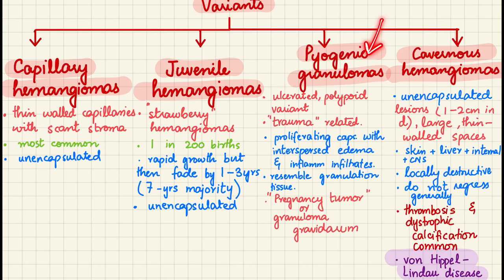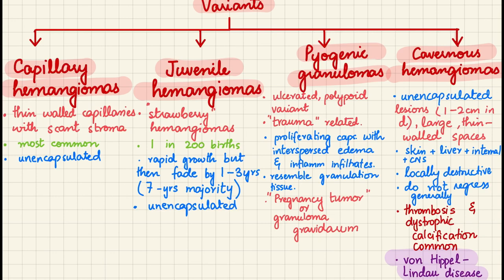Pyogenic granulomas are ulcerated polypoid lesions that are trauma-related: after trauma there is a healing process, so these granulomas contain granulation tissue-like substance. Histologically they show proliferating capillaries with interspersed edema and inflammatory infiltrate, all part of a repair process. One example is the pregnancy tumor, or granuloma gravidarum, present chiefly in the oral mucosa or on the fingers of pregnant women, usually requiring surgery to remove.